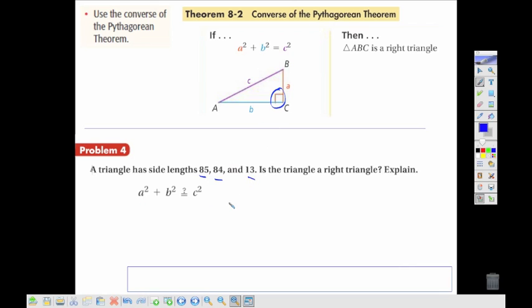So we have three lengths here. First, we should recognize which side has to be c. c has to be the longest side, so that would be the 85, so we'll plug that in for c. The a and b don't really matter about the order, so let's say 13 squared plus 84 squared. Working that out, we end up with 169 plus 7056.